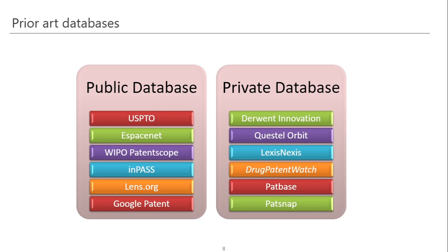Based on all this, we can divide the entire prior databases into two parts: public databases and private databases. Public databases belong to a particular country, are the original databases, and are freely available to all. Examples include the United States Patent and Trademark Office, the European body eSpaceNet, WIPO PatentScope, and the Indian patent database InPass. Some private organizations also provide free public databases like lens.org and Google Patents.